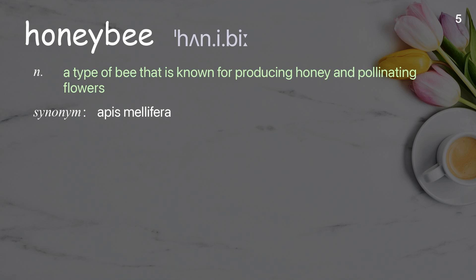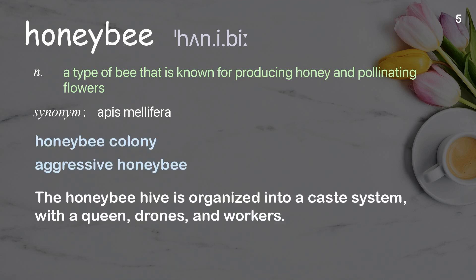Honey bee: A type of bee that is known for producing honey and pollinating flowers. Examples: Honey bee colony, Aggressive honey bee. The honey bee hive is organized into a caste system, with a queen, drones, and workers.